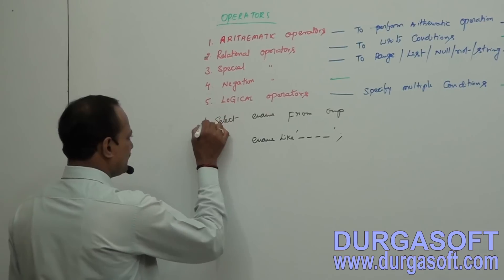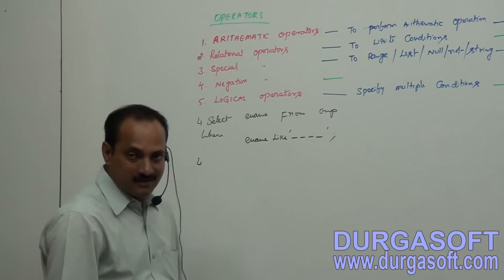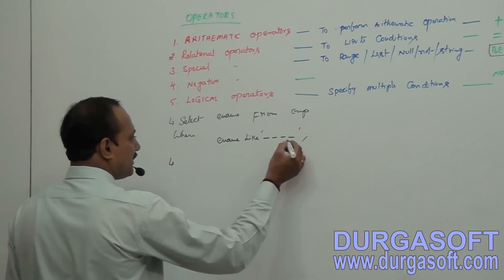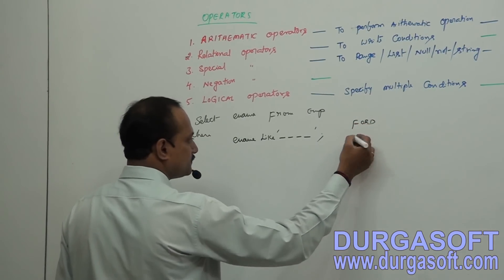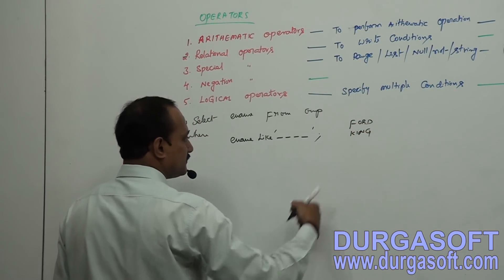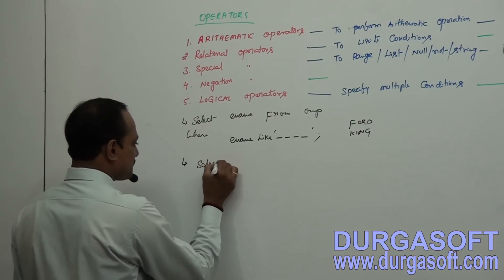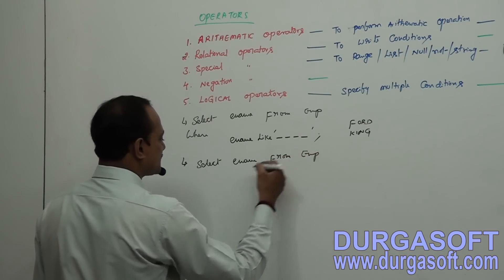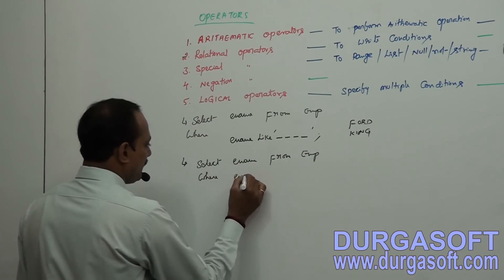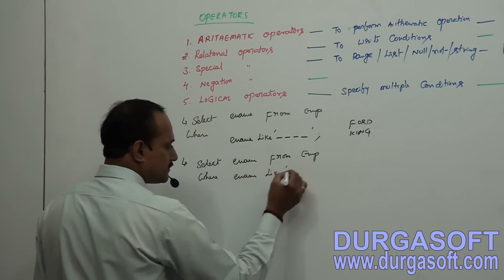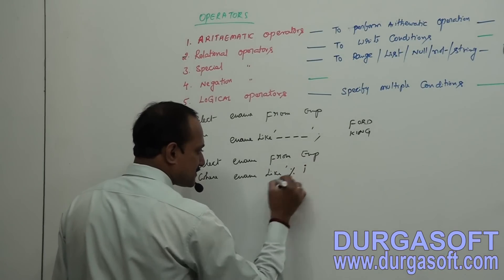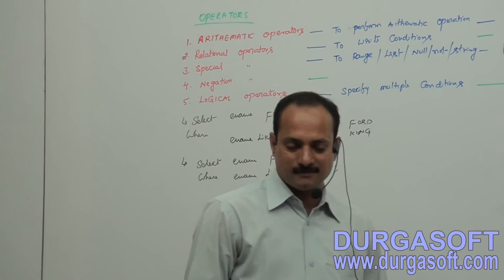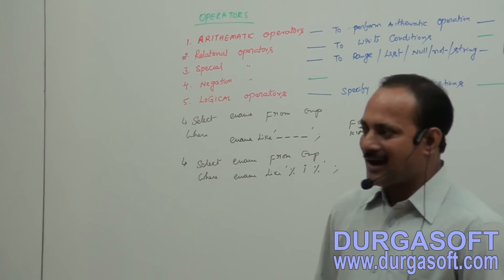Next, what is percentage? Get employee names containing the character I. Select ename from emp where ename like '%I%' — before I, any number of characters; after I, any number of characters. No spaces between I and the percentage symbols. It will get all employee names having the character I.